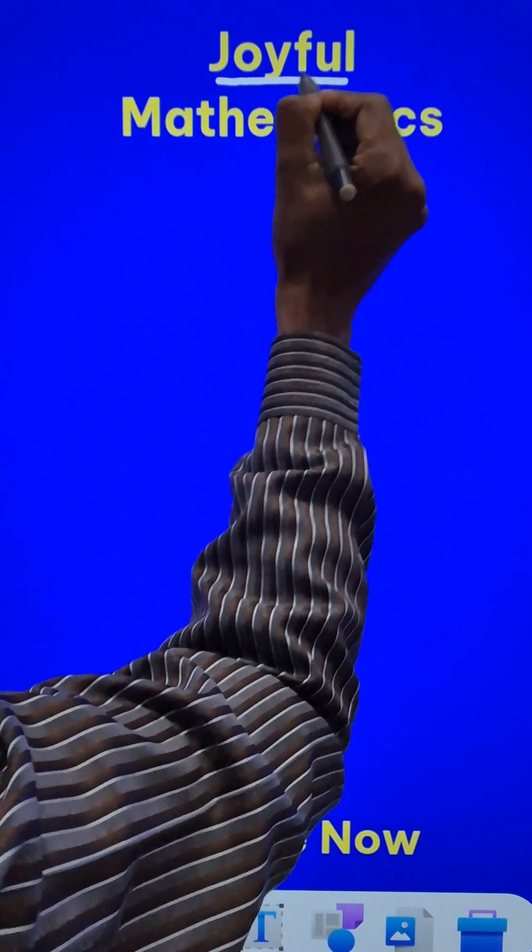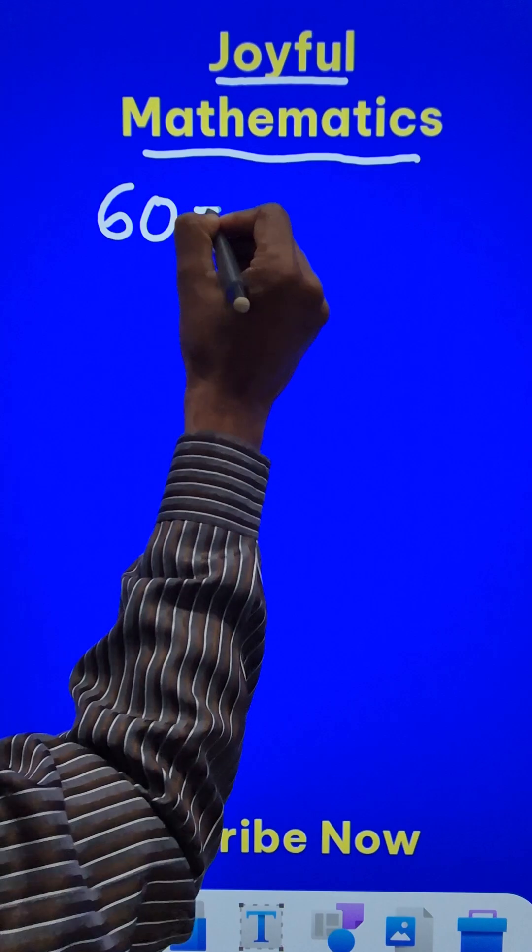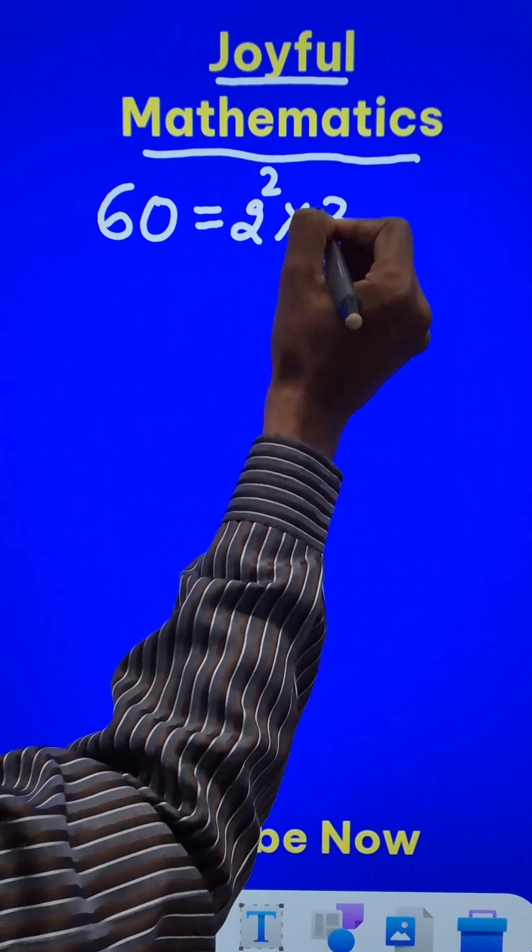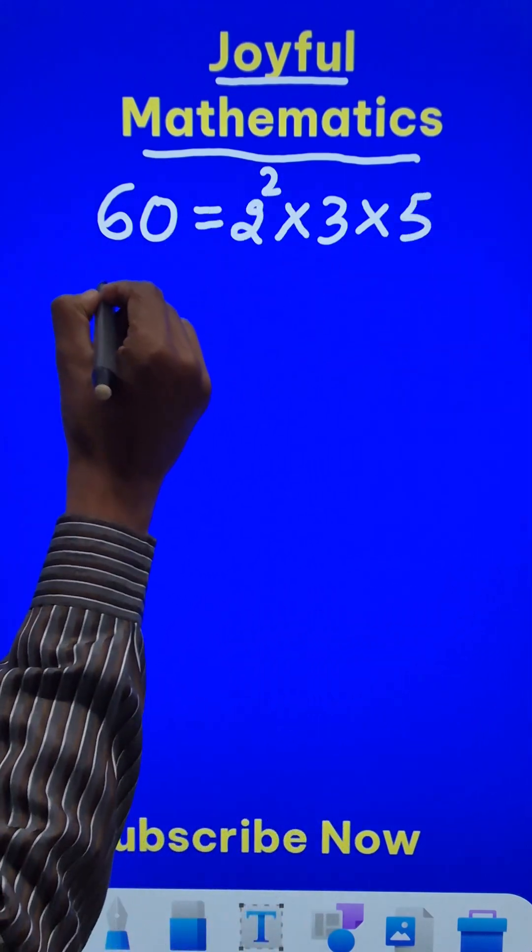Here is a piece of joyful mathematics. Do you know the number 60 which has prime factorization of 2 squared, that is 4 times 3, that is 12, and times 5, that is 60 right? Has how many factors?